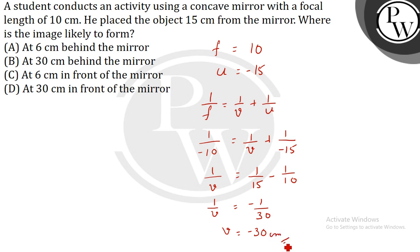Minus 30 means that the image is formed in front of the mirror. So the correct answer is option D: at 30 centimeters in front of the mirror. Thank you.